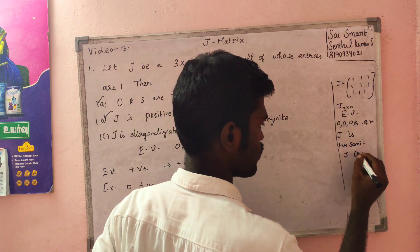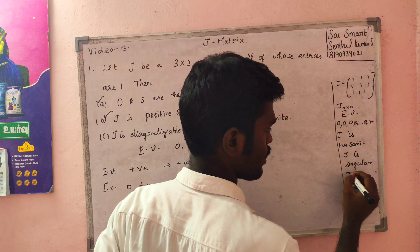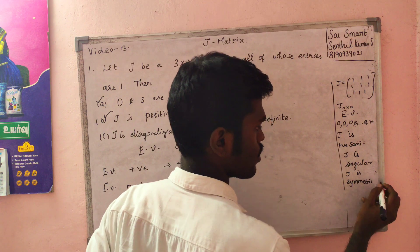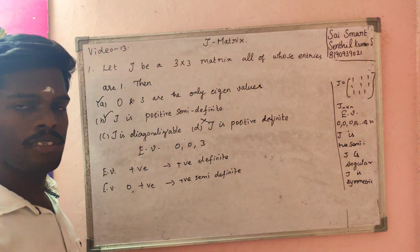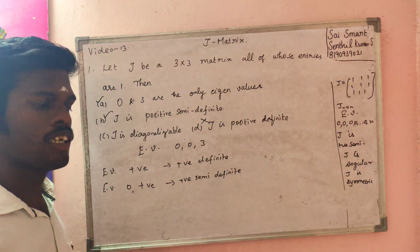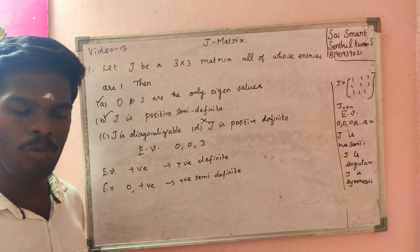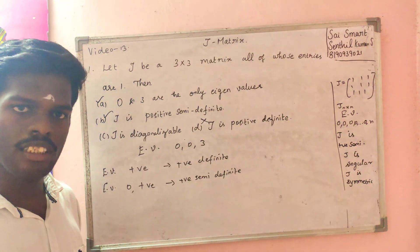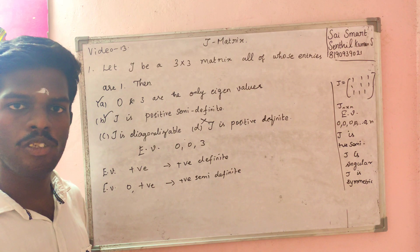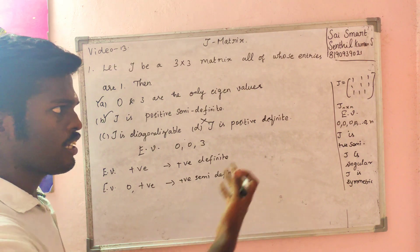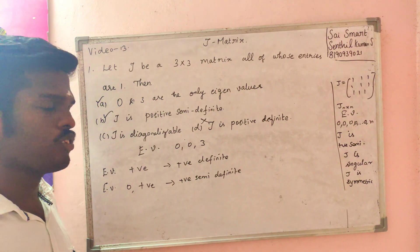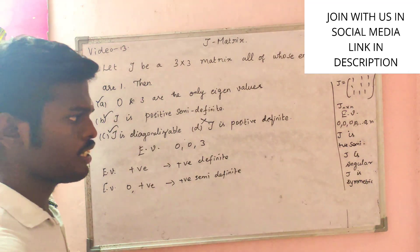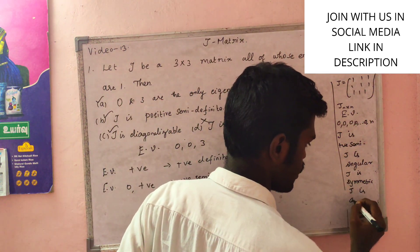J-matrix is singular. J-matrix is symmetric. Symmetric matrices have distinct, identifiable eigenvalues. Given matrix is symmetric, so J-matrix is automatically diagonalizable.